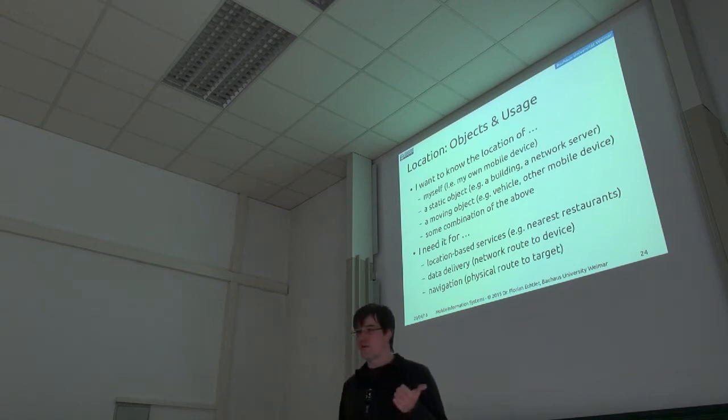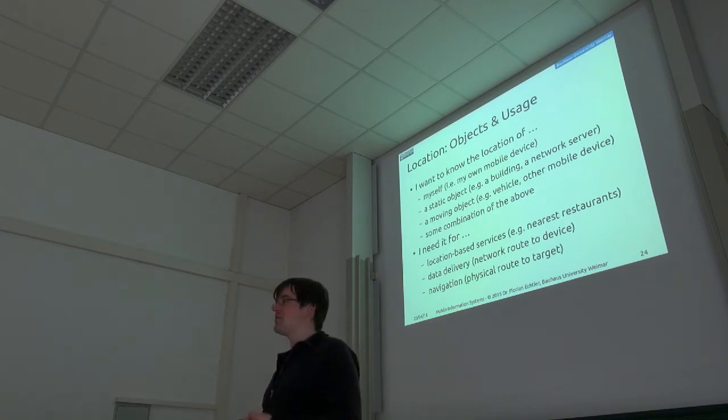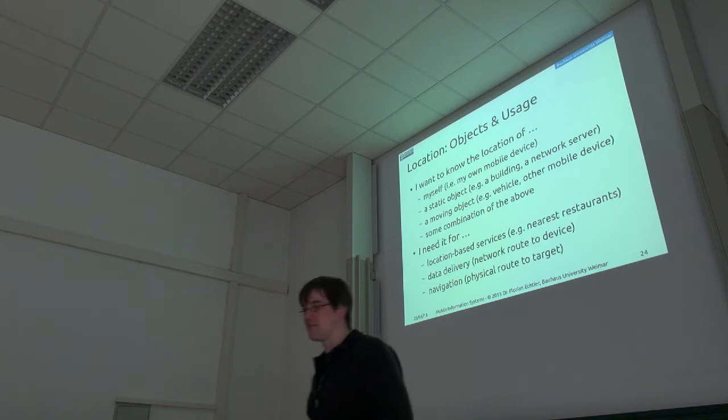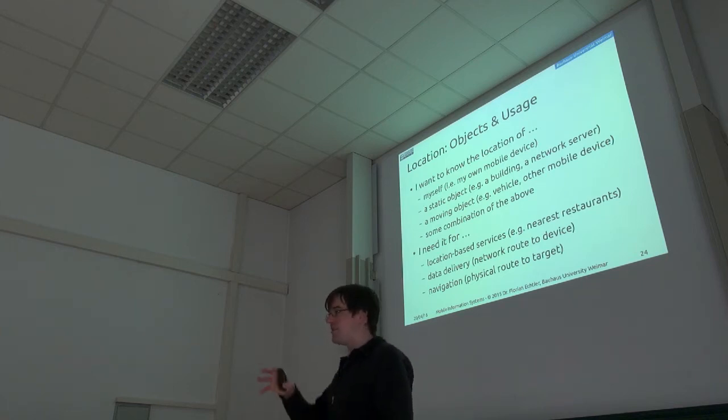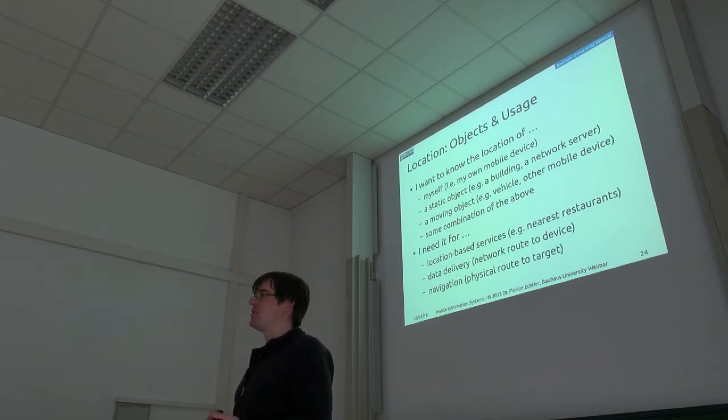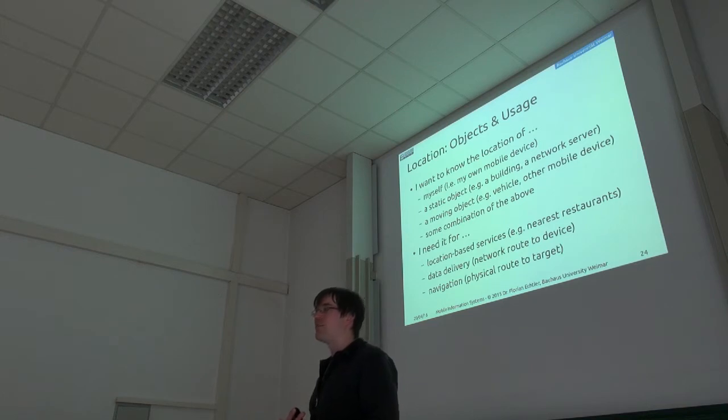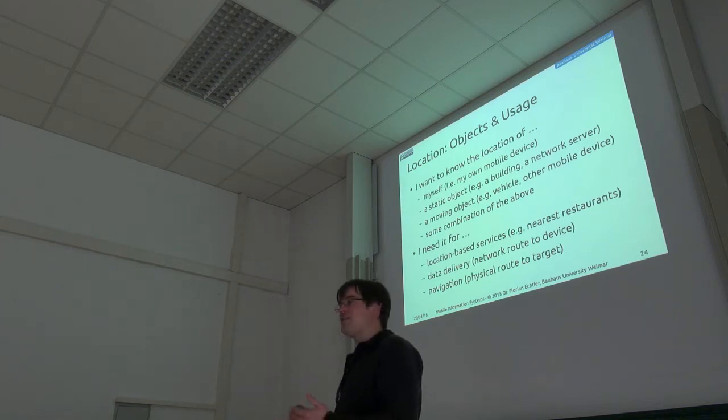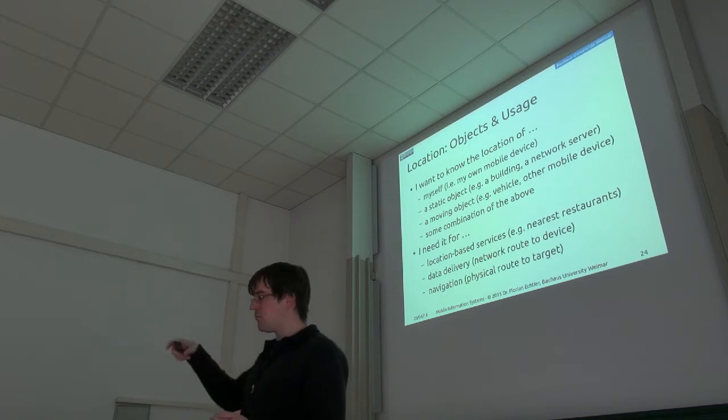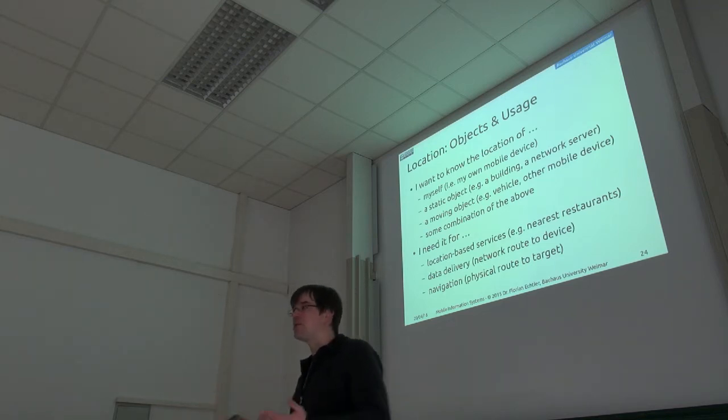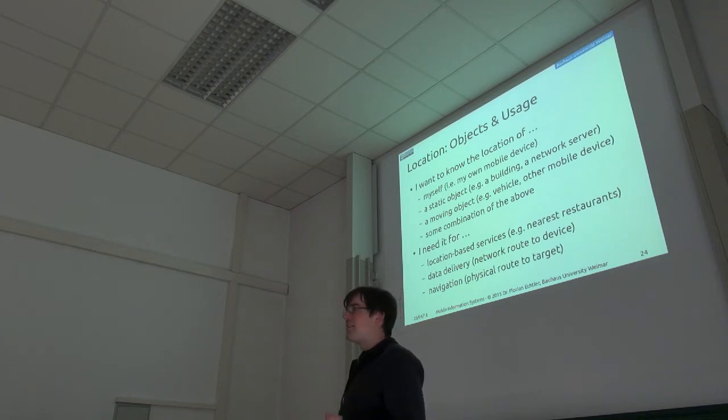So what do you need that for? Of course, first idea most people have is something like location-based services. That means just show me the next five restaurants or something. But it can also be, if you look at location from a network point of view, you might actually just want to know the network location of a specific object to deliver data to it. So network location in this context means, for example, I want to know which access point my Wi-Fi device is connected to because then I need to send my data to that access point. And it might mean something like navigation. So I want to know a route from my current location, for example, to one of the restaurants I just found.